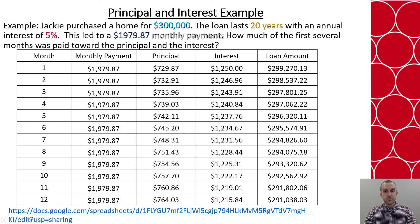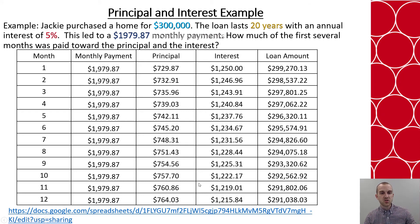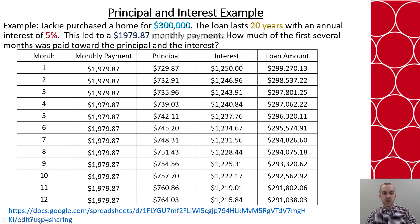Here are the first 12 months completed so you can see. To do it by hand becomes a long process, which is why much of this is done using a calculator or program. So let's look at a way we could do this using Google Sheets.